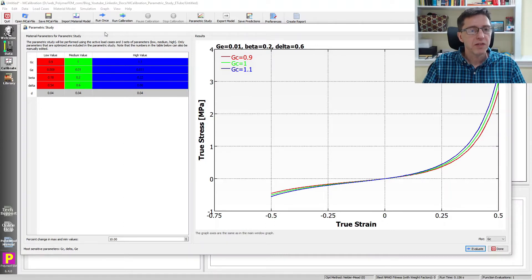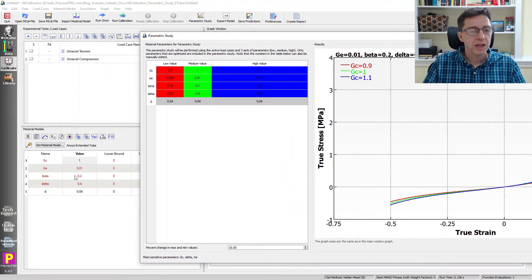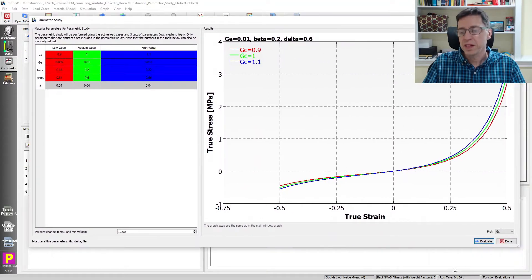We have a table here on the left that has the same parameters as in the main window. The green values, the medium values, are the same. Then by default mCalibration picks a value that's 10% lower and 10% higher. Then it plots the curve for each of these. Right now it's plotting the situation where GE is 0.01, beta is this, and delta is this. These are the median values here. Then it plots the three values of different GC values. These are the three curves that are shown here. We see now increasing GC from 0.9 to 1.1 increases the stiffness both in tension and compression. Remember this is true stress, true strain that we're plotting.